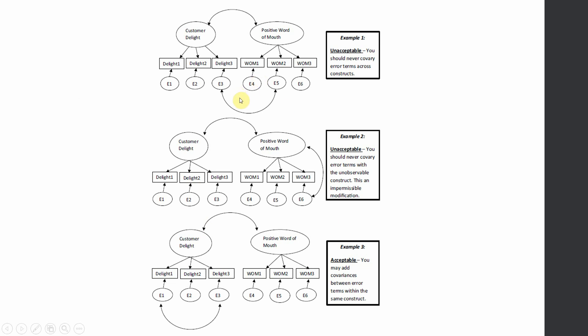There are certain do's and don'ts that must be followed. This is not allowed: drawing covariance between two different constructs. Covariance between E3 and E5 is not allowed because E3 is from one construct and E5 is from the other. You cannot draw covariance between error term and your unobservable construct.